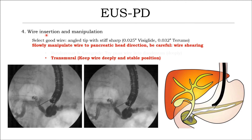Step 4: guidewire insertion and manipulation. Slowly manipulate the guidewire into the pancreatic head direction. Be careful while advancing. For the antegrade stenting approach, keep the guidewire deeply and stably positioned in the pancreatic head.